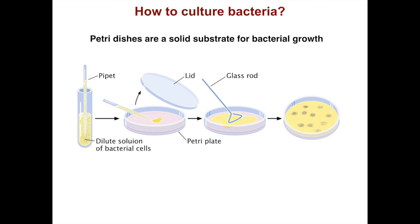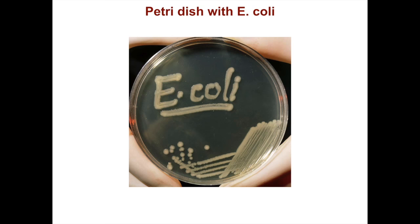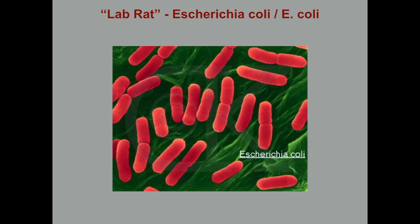You can also culture bacteria on a solid substrate — that's what petri dishes are used for. You dilute the bacteria, spread them on the plate with a glass rod, and then get colonies that you can streak out and isolate. Each colony consists of genetically identical cells, which is very useful in molecular biology applications. Here's an example of a petri dish with E. coli — you can see different-sized colonies, and under closer examination, E. coli are rod-shaped bacteria, with some in the process of cell division.